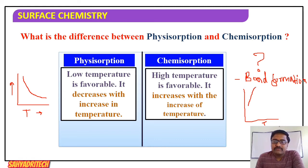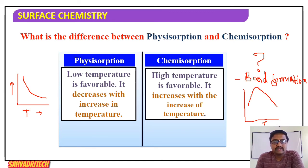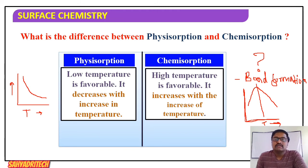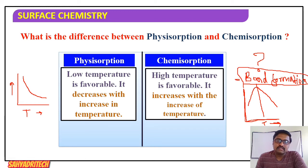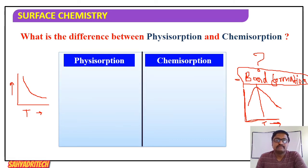Initially, as temperature increases, chemisorption also increases because the applied heat energy is used to form a bond between adsorbate and adsorbent. Thereafter, chemisorption decreases with further increase in temperature. So chemisorption first increases then decreases with increasing temperature.